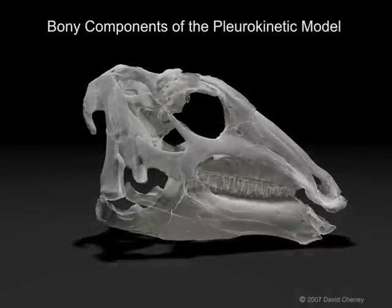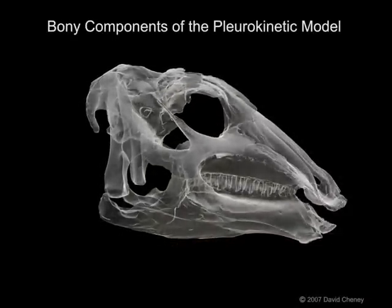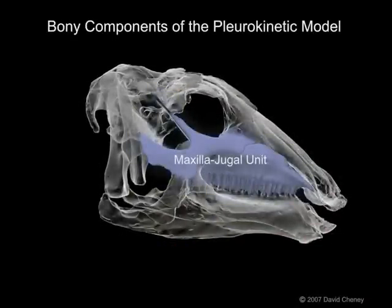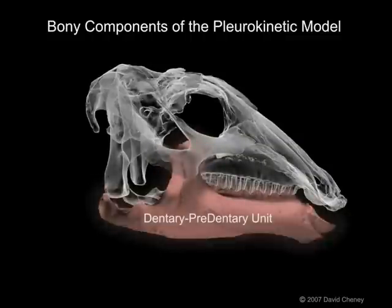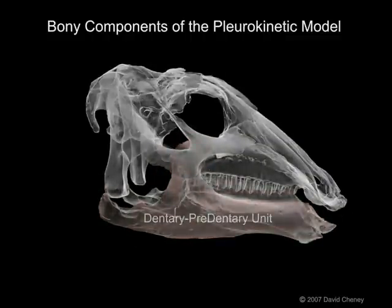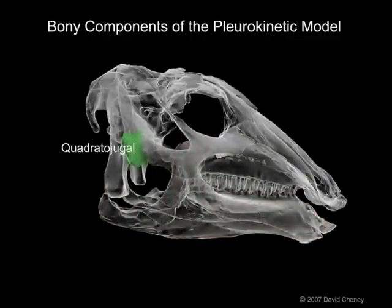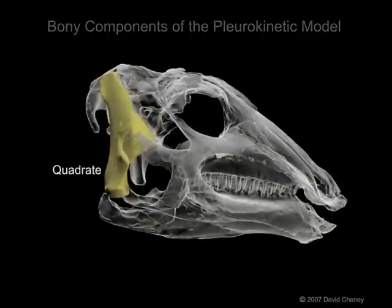Four main components of the skull are mobilized during mastication: the maxilla jugal unit, the dentary pre-dentary unit, the quadrato jugal bone, and the quadrate bone.